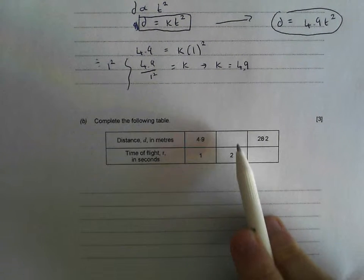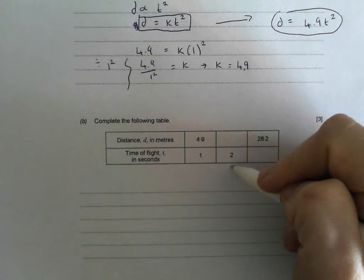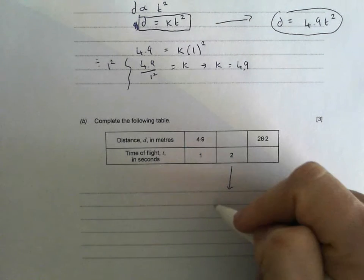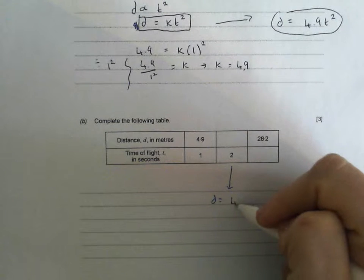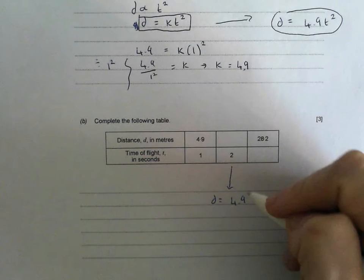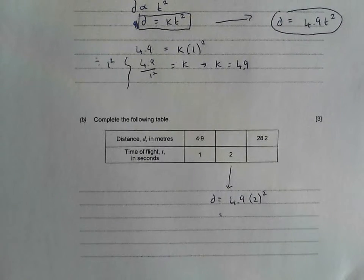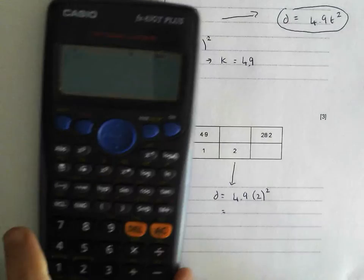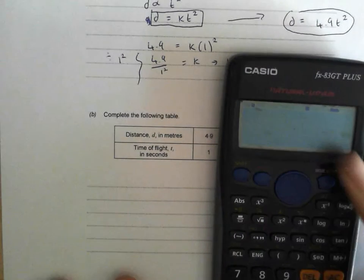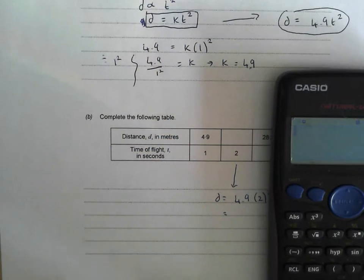I want the distance when the time is 2 seconds. So let's have a look. d is going to be equal to 4.9 lots of t squared. In this case, t is 2. So d is going to be equal to 4.9 times 2 squared. Let's get the calculator out for this one. Hopefully you can see that. So we have 4.9 times by 2 squared. 2 squared is going to be 4.